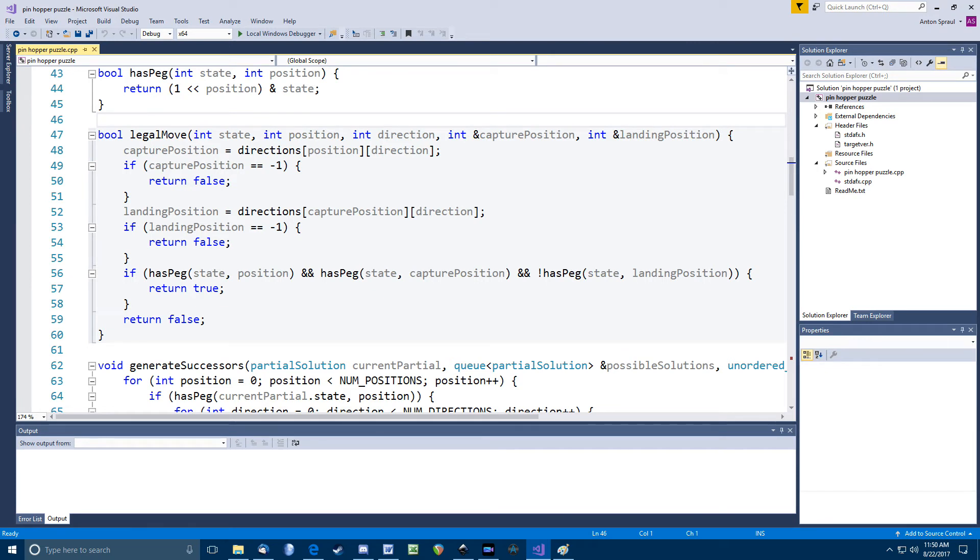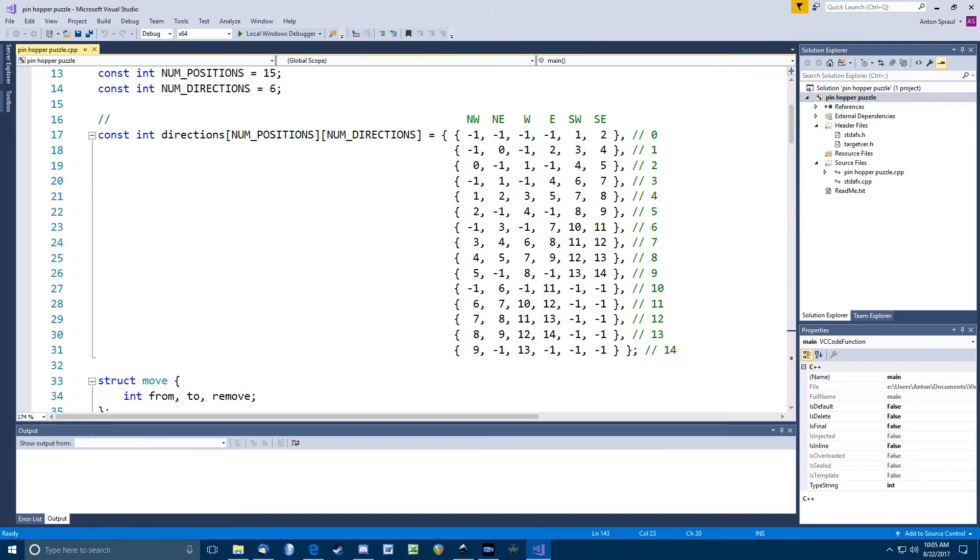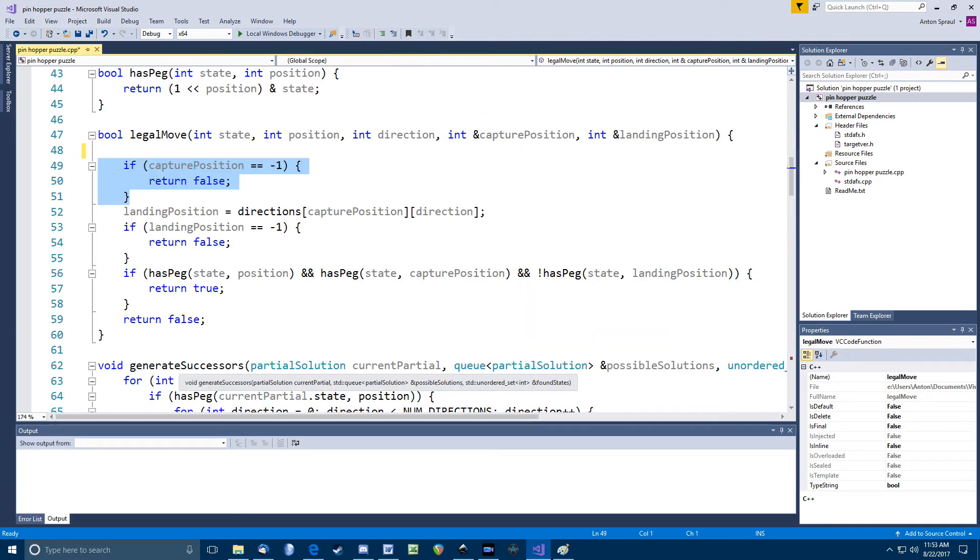Next up is legal move. This function tells me if there is a legal move in a particular direction. So, direction here is a number from 0 to 5. 0 is what I call the northwest position in my array and so on. The function first determines what the adjacent position is in that direction using my directions constant array that I created earlier. If that's negative 1, there's no position there and we're done. If not, I use that same idea to find the position adjacent to the adjacent position in the same direction. Again, if there's no position there, we just return false. Otherwise, we make sure there's a peg in the current position and in the capture position, but it's empty in the landing position. If all that checks out, it's a legal move.